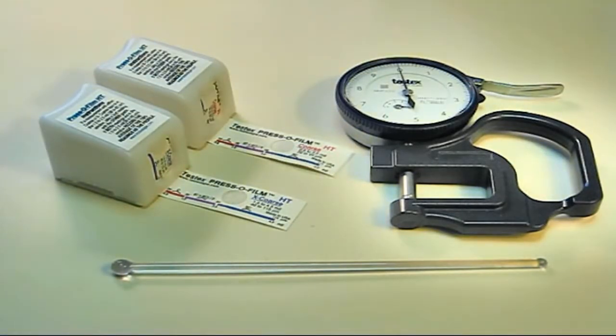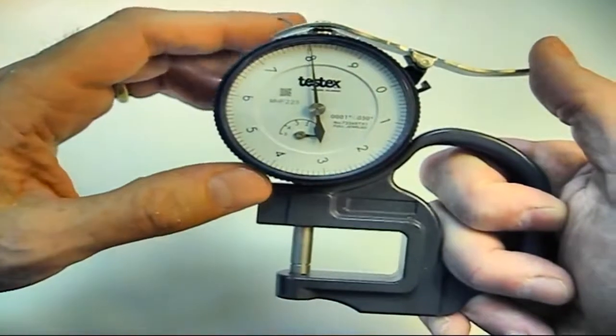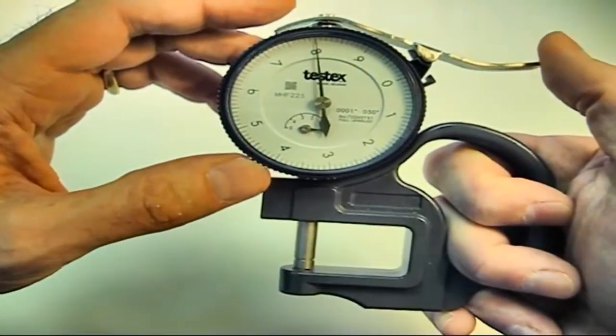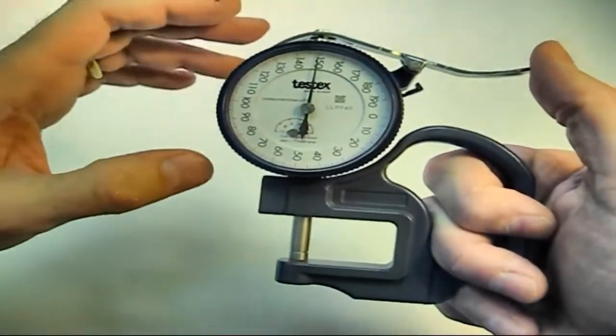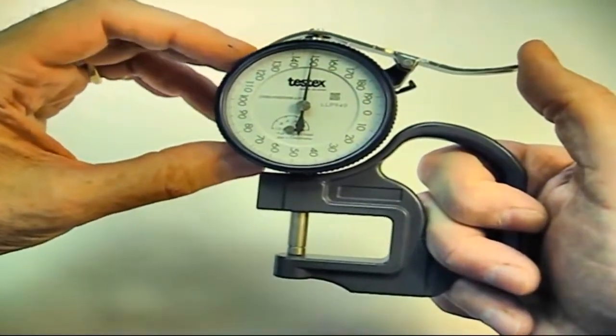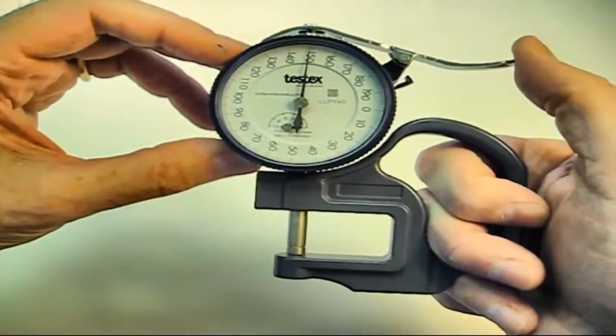Be sure the gauge is one that has been specifically designed for use with replica tape. A gauge measuring in thousandths of an inch, or mils, looks like this. A metric gauge measuring in micrometers, or microns, looks like this.